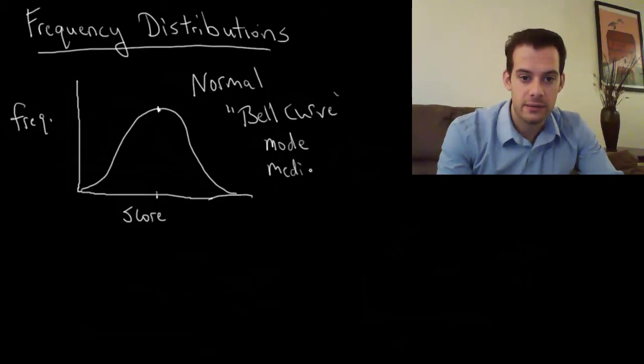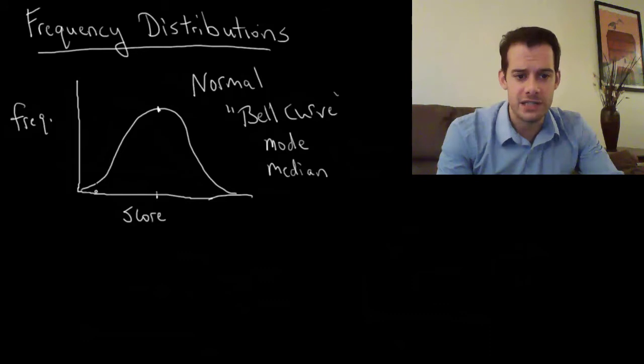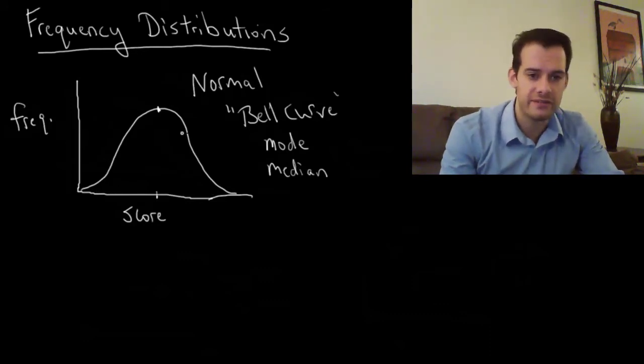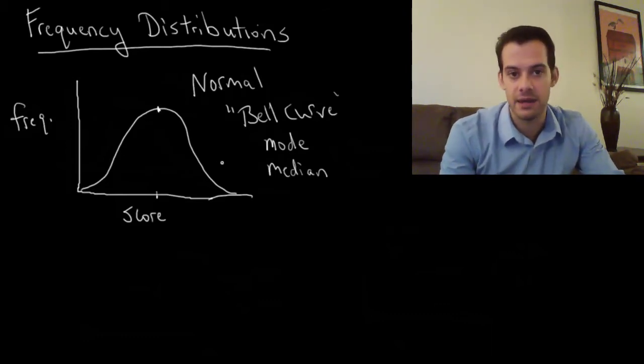How about our median? Well a median is the middle score. And if these are symmetrical, and 50% are on this side and 50% are on this side, well then right here in the middle is going to be our middle score. It's going to be our median. It's going to fall exactly in the middle of our distribution.